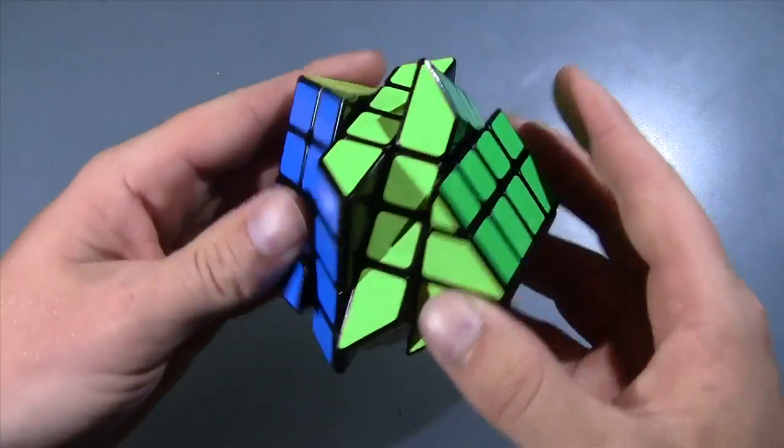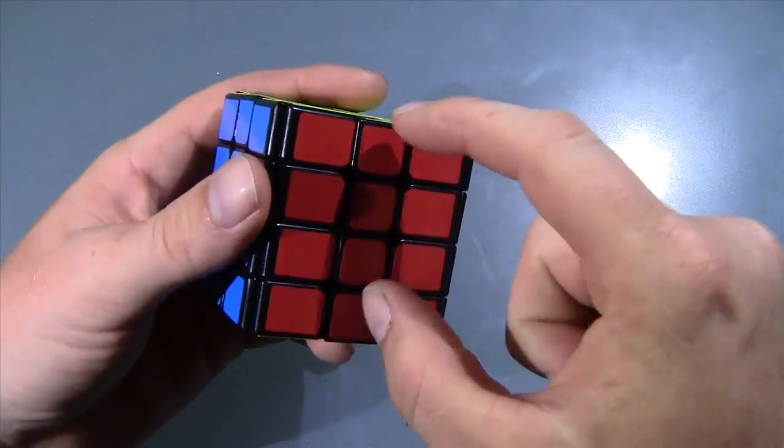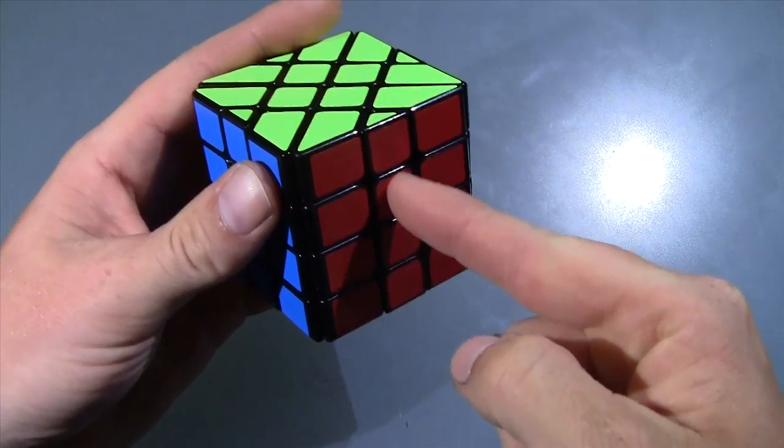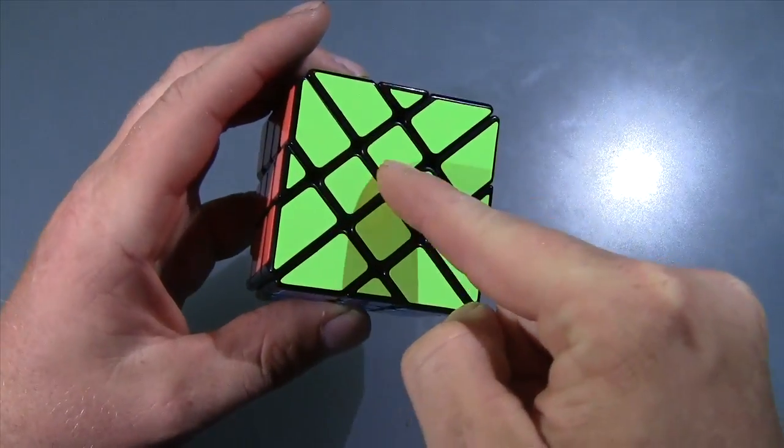So here we've got one, two, three, four layers. And so these two here are actually corners and these are edges, not centers. These four here are the centers just like this.